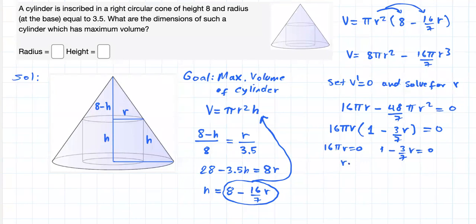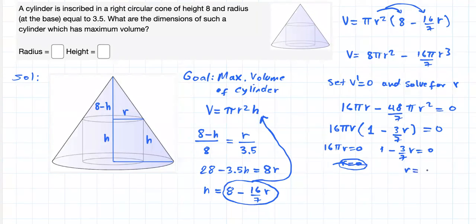Setting each factor containing the variable equal to 0: from the first factor, r equals 0, which clearly doesn't make sense — if r is 0 there is no cylinder and no volume, so we ignore this. However, from the second factor, this leads to r equals 7 over 3, which makes sense — a serious candidate to maximize the volume of the cylinder.